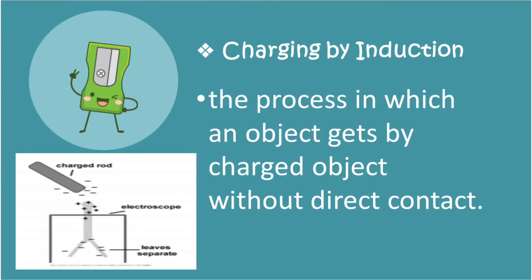The last process is the charging by induction. It is the process in which an object gets charged by object without direct contact. The movement of electrons to one part of an object by the electric field of another object. No contact is necessary and a neutral object needs only to come close to a charged object. For example, the leaves of the electroscope move separately when the charge rod is placed near the electroscope.